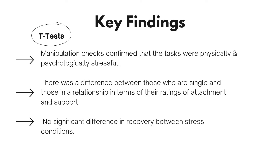T-tests were conducted for several reasons: first, as manipulation checks to confirm the tasks were physically and psychologically successful; and second, to examine whether relationship status differed in ratings of attachment and support. A difference was found between single participants and those in a relationship, so relationship status was used as a confounding variable in the moderation analysis. There was no significant difference in recovery between stress conditions — whether participants did a maths task or a speech task, or the order in which they did both, did not matter.